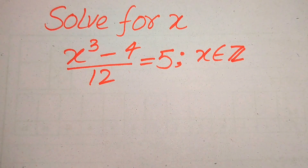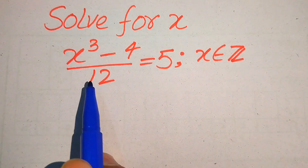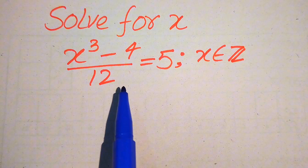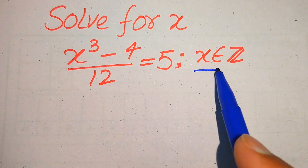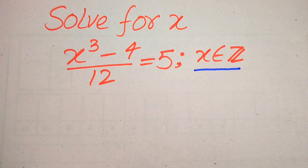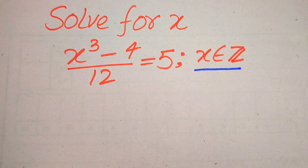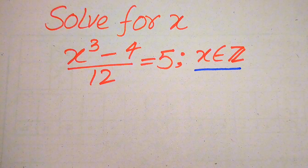Hello everyone. How to solve this problem: find the values of x if we have (x³ - 4) / 12 = 5, and we solve this problem for the integer values of x. This condition means we find all integral solutions of this equation. We solve for the values of x — if you have any other method, please write it in the comment section.